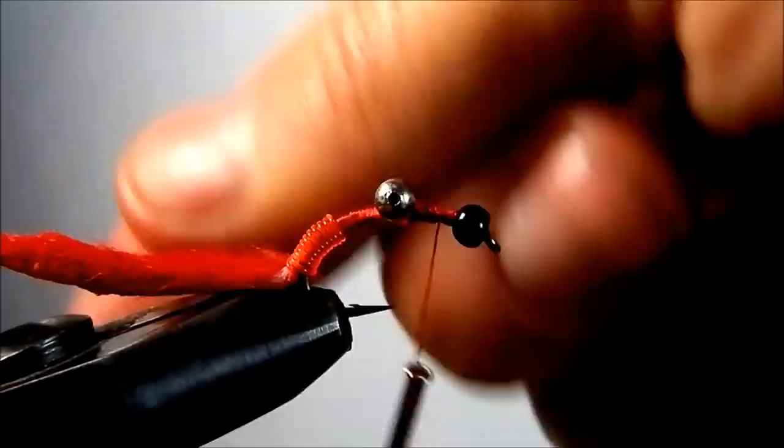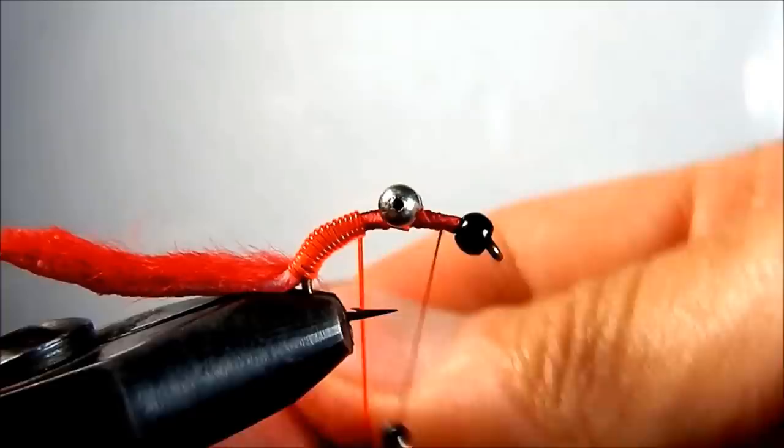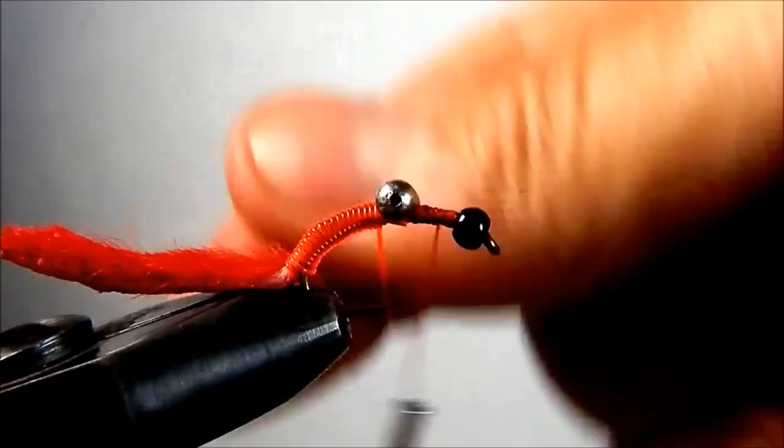I'm going to go ahead and just wrap the amnesia forward all the way down the hook shank to behind the eyes.